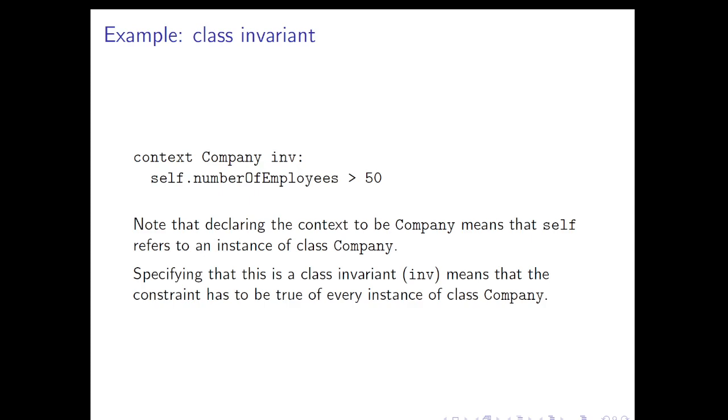One of the things we often want to be doing with OCL is to constrain what it means to be a well-formed or legitimate system. In this case, a well-formed or legitimate object of class Company in ways which are hard or impossible to do diagrammatically. So what we're saying is, in order to be a well-formed, legitimate, or correct object of class Company, you have to satisfy this invariant that self.numberOfEmployees is greater than 50.